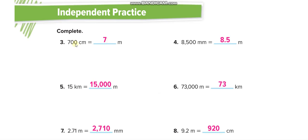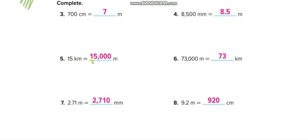700 centimeters divided by 100 equals 7 meters. 8500 millimeters — one meter is 1000 millimeters, as we saw on the first page — so divide by 1000: that is 8.5 meters. 15 kilometers equals 15,000 meters. 73 kilometers equals 73,000 meters.